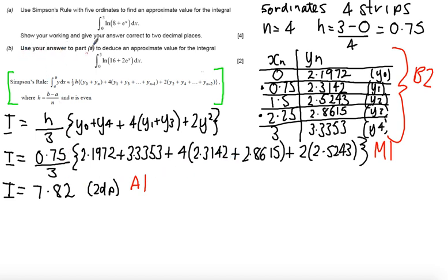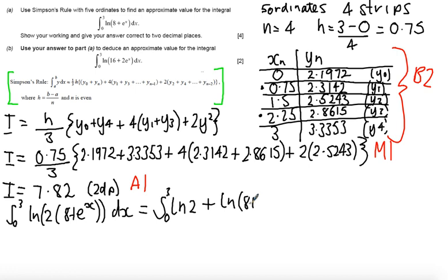Part B says, use your answer to part A to deduce an approximate value for the integral 0 to 3 log of 16 plus 2e to the x. The thing to notice here is that 0 to 3 log of 16e to the 2x is the same as log of 2 times (8 plus e to the x) dx. Now, using my laws of logs, I can rewrite this as the integral of log 2 plus, so this is from 0 to 3, log(8 plus e to the x).